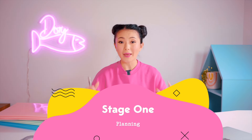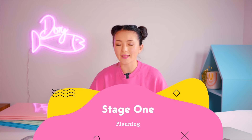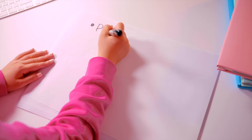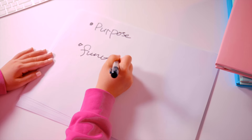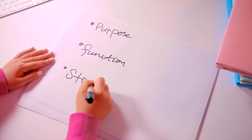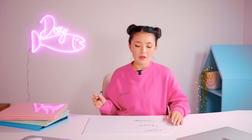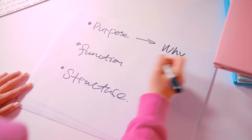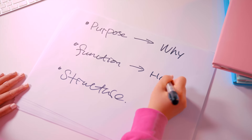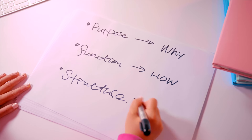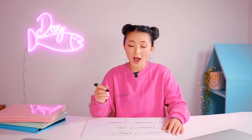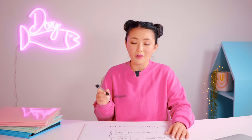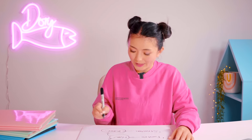Before we dive into making our website, let's make a plan. I will tackle three questions: the purpose of my website, the function, and the structure. Purpose is about why — why do we need a website? Function is about how — how we make and define this website. Structure is what we will finally get. Understand why, then we know how to do it, and finally decide what we can get.